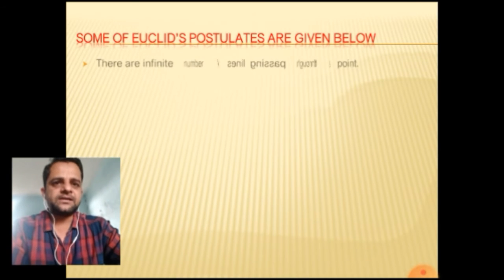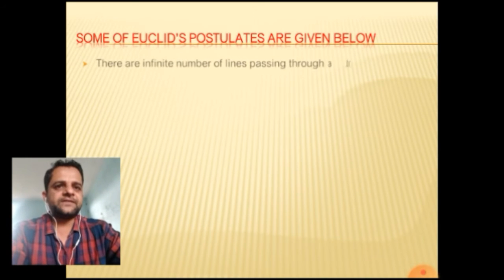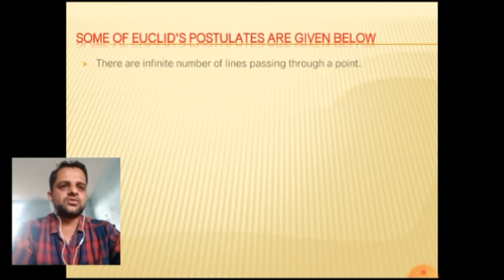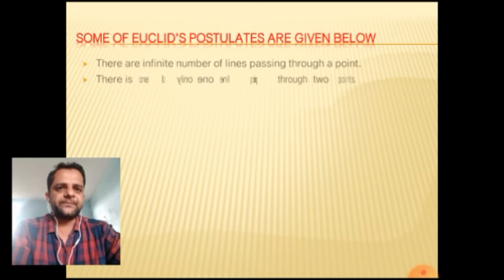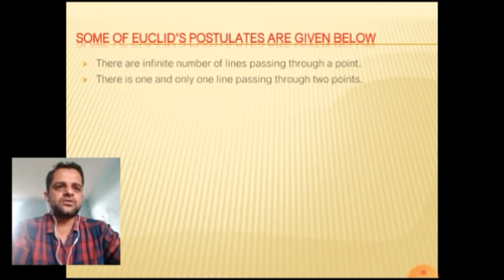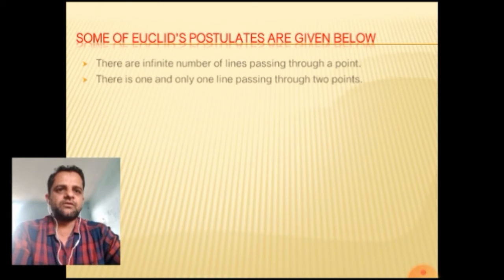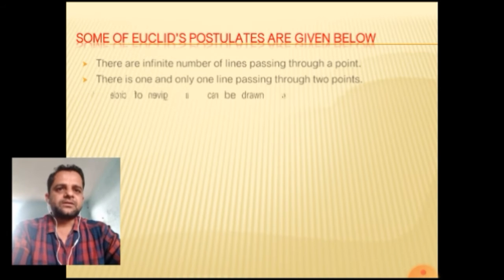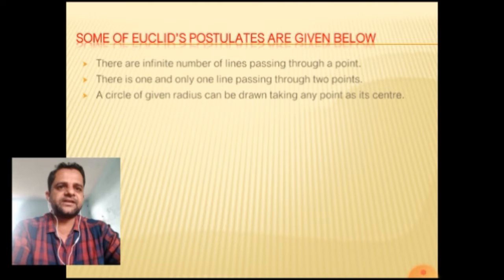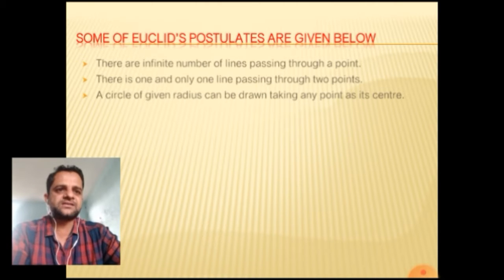First postulate: there are an infinite number of lines passing through a point. Second: there is one and only one line passing through two points. Third: a circle of a given radius can be drawn taking any point as a center.